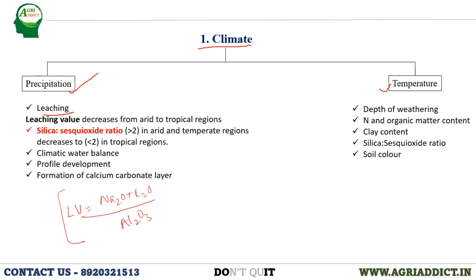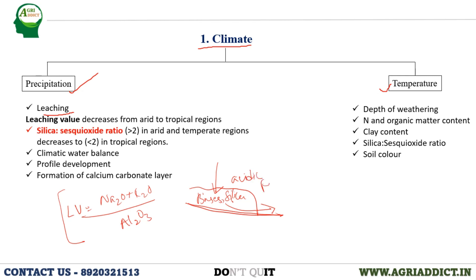What is leaching? If we take our soil surface and there is rapid rainfall onto it, the bases and silica will get leached away along with the water. After the removal of those, the soil will remain acidic and form the oxides of iron and aluminum. So this is the basic process occurring. Leaching value — if we see this formula — what is given?